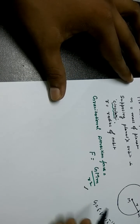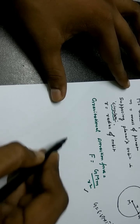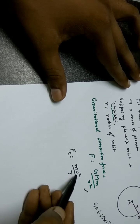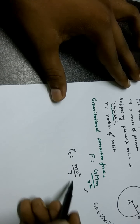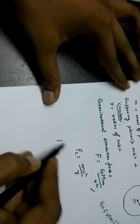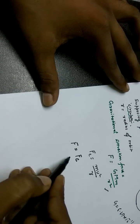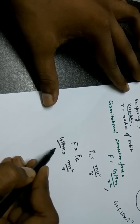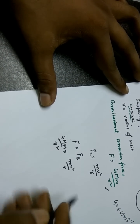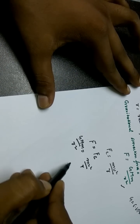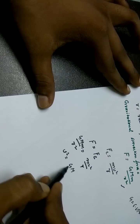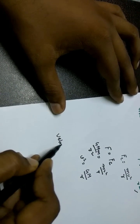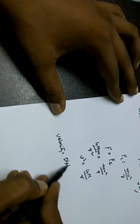Here, gravitational attraction force provides the necessary centripetal force. So the centripetal force Fc = mv²/R, where v is the speed of the planet and m is its mass. Setting the gravitational force equal to the centripetal force: GMm/R² = mv²/R. Cancelling R and m, we get v² = GM/R.